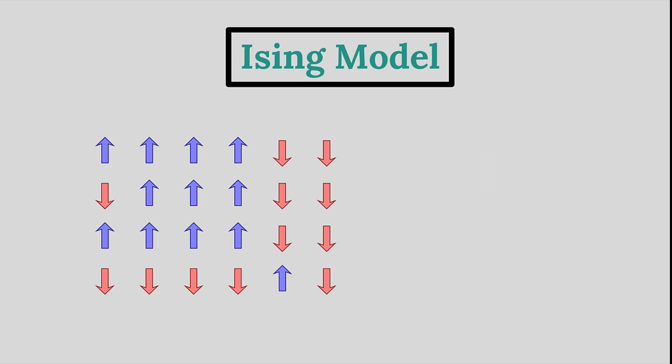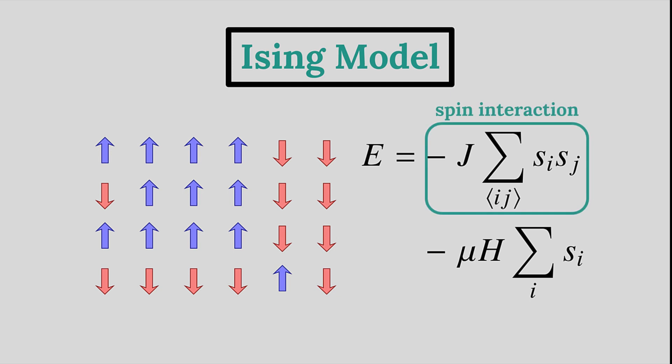Here is the total energy for the 2D Ising Model. We see two terms in the energy. The spin interaction term, with coupling constant J, where summation is over all nearest neighbors. For example, take the site outlined in red. Its nearest neighbors are outlined in green.